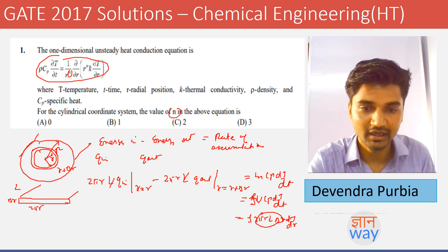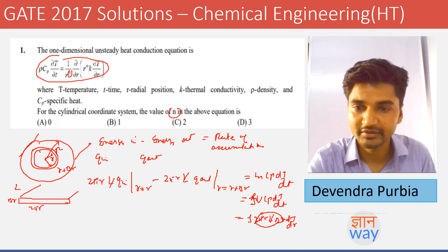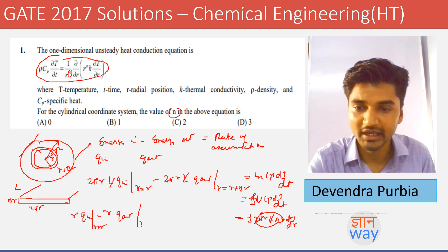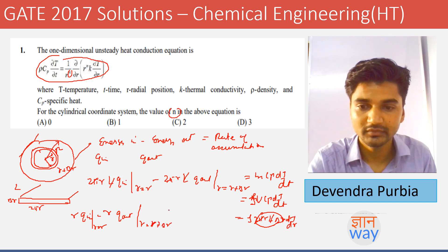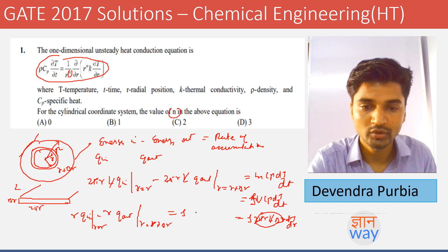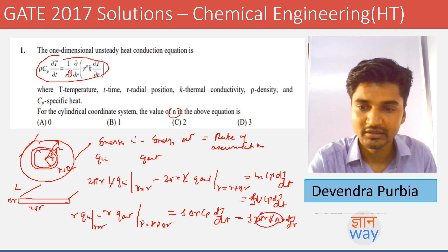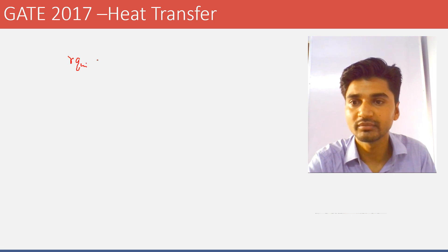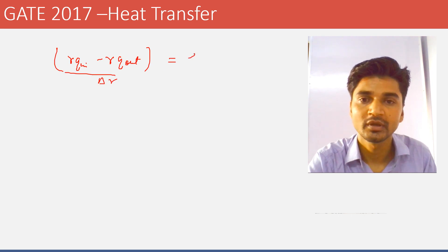After simplification, L and 2π cancel. The equation becomes r·q_in minus r·q_out at r plus delta r equals rho·delta r·cp·dT/dt.